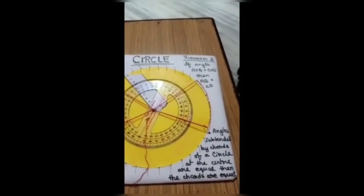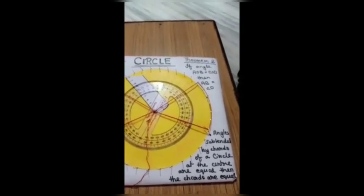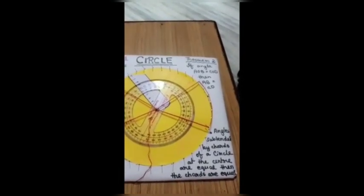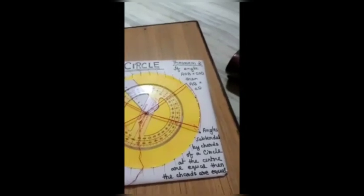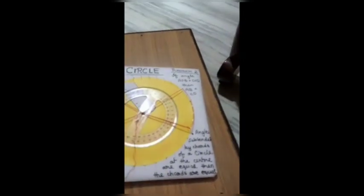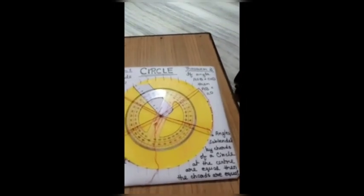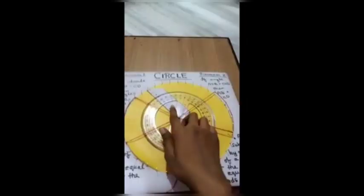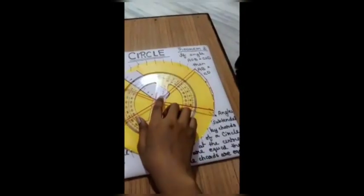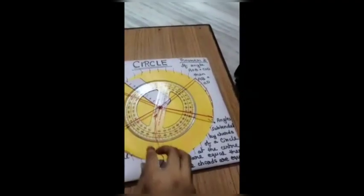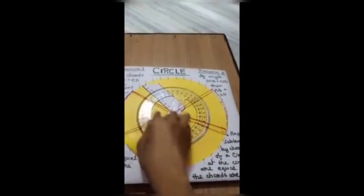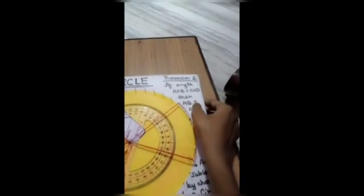Now theorem 2: angles subtended by chords of a circle at the center are equal, then the chords are equal. That means all the angles are equal, as you can see.